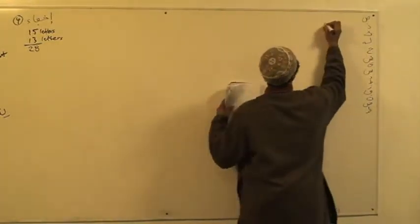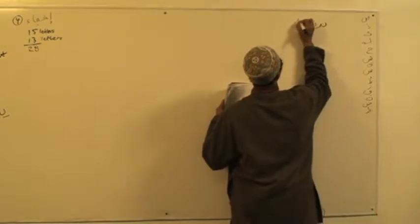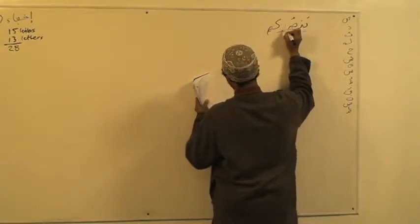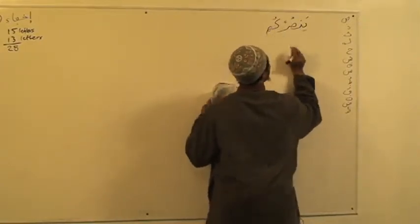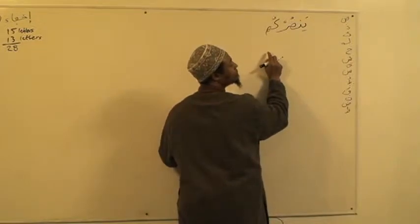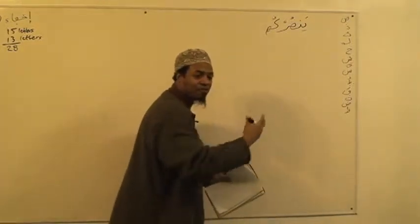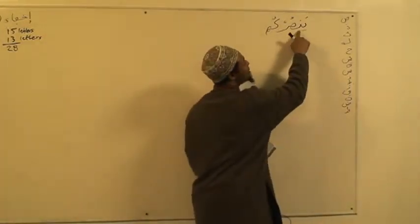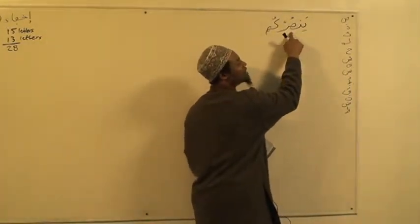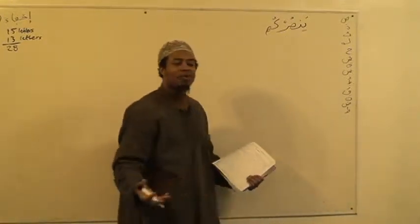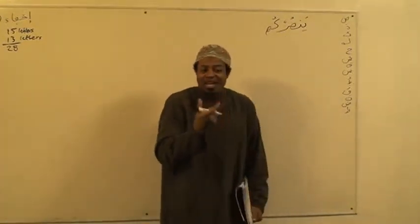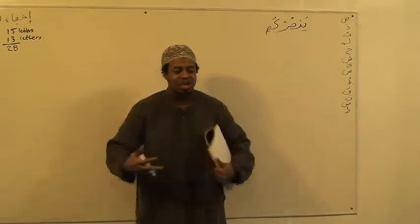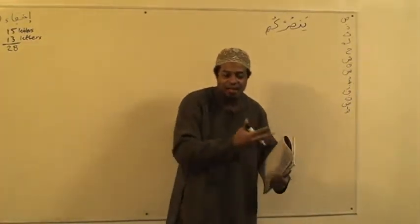So what's the first one? We have a noon sakin going next to a sad in one word. You fade that into that. What we have here is a noon sakin next to a sad. So that is the rule — it's between being clear and being entered into the next letter. So it's faded in. You understand that?